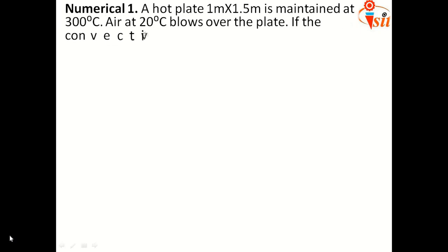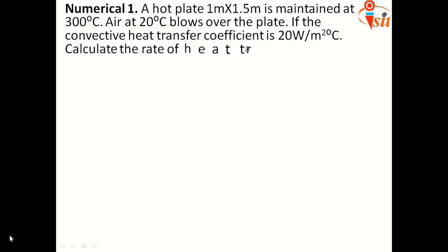Now, take one example. For example, a hot plate of 1 meter into 1.5 meter is maintained at 300 degree Celsius. That means the surface temperature Ts, which is 300 degree Celsius. Air at 20 degree Celsius blows over the plate. That means this 20 degree Celsius is the fluid flow, or you can say here Tf. If the convective heat transfer coefficient is 20 Watt per meter square degree Celsius, calculate the rate of heat transfer.